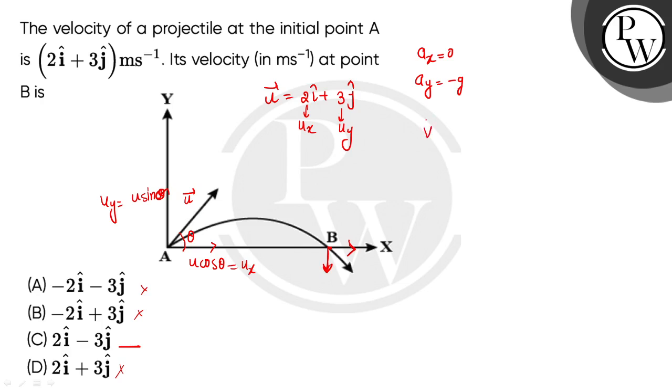If I have to find the velocity vector at point B: vx i cap plus vy j cap. Vx will be equal to ux because acceleration in x direction is zero. So speed will not change in x direction. Vx will be equal to ux, so it will be equal to 2.